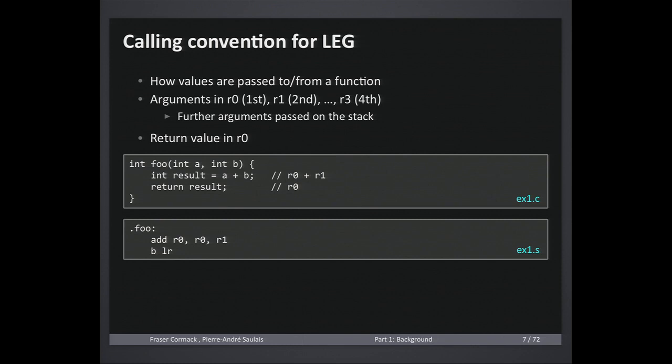Here's a simple example: a function that takes two integers, adds them together, and returns the result. To generate the matching code, you need to know in which registers the function arguments are passed and how they are returned — this is called the calling convention. In Leg it's simple, just like ARM: the first four arguments are passed in R0 to R3, any further arguments are on the stack, and R0 is the return value.